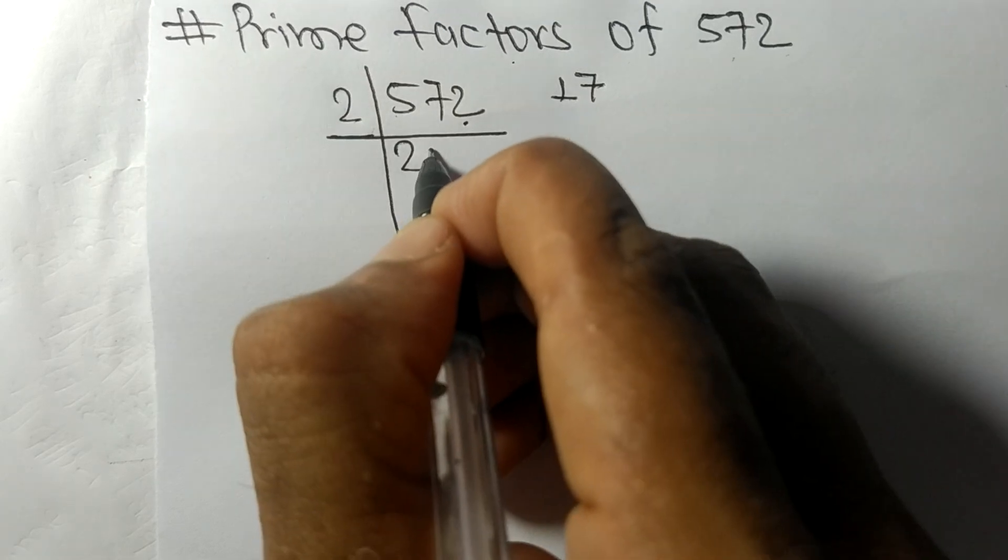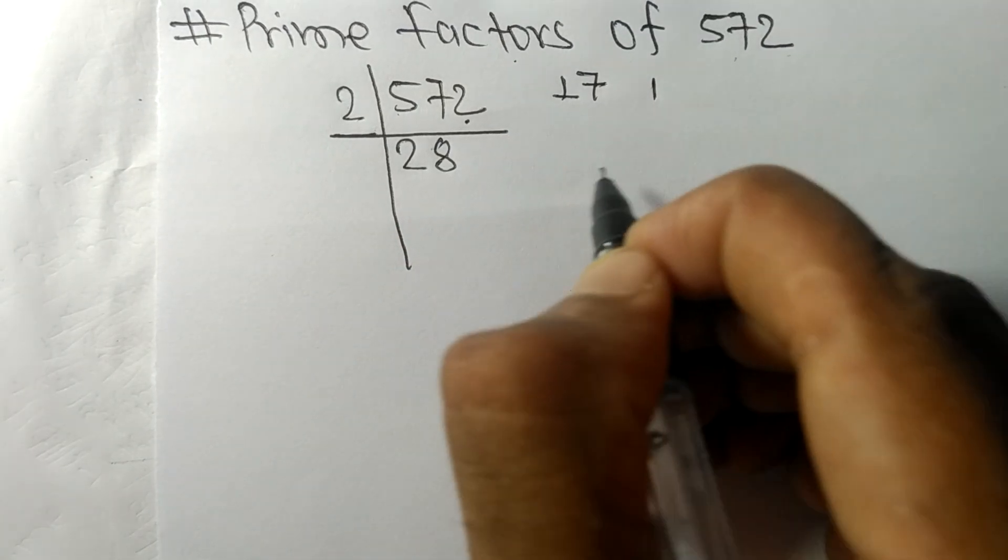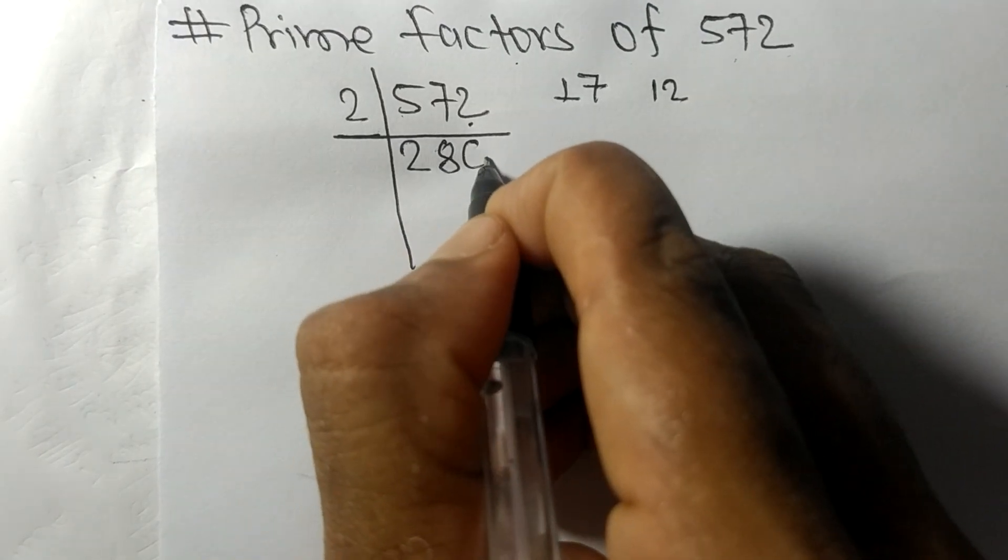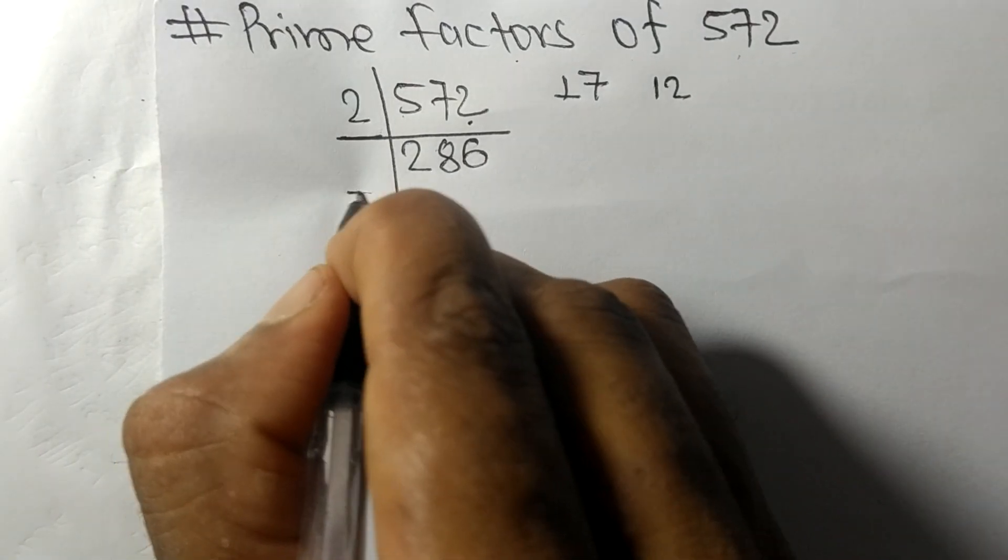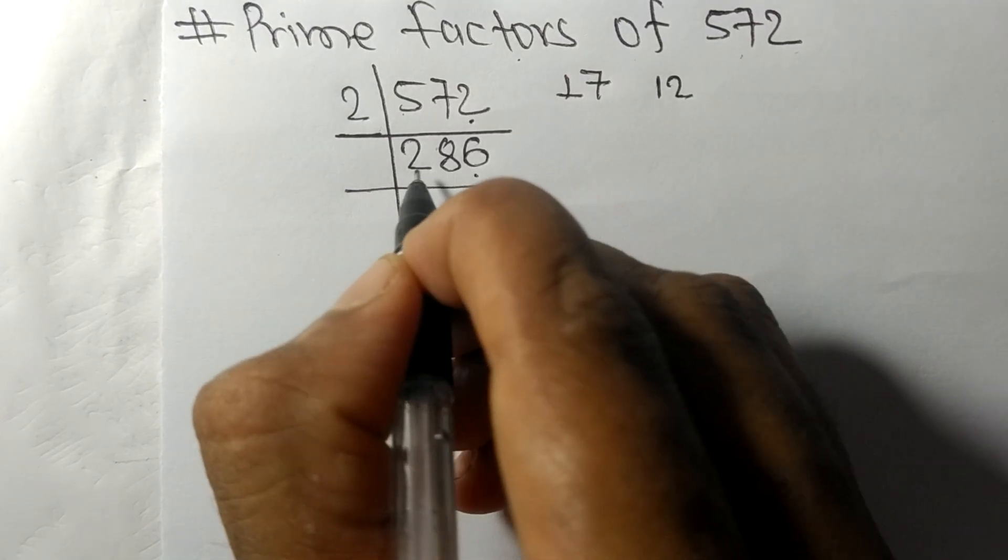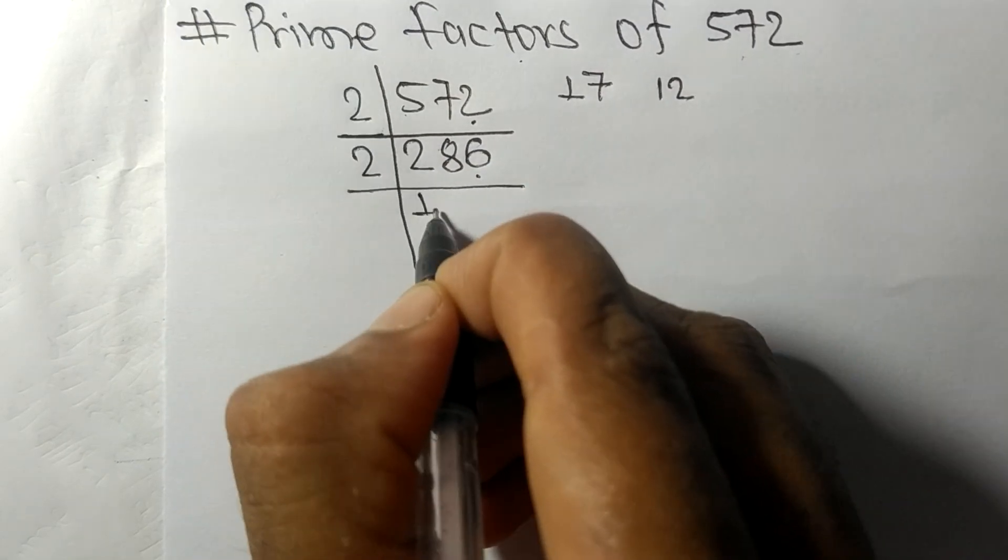So again we have even number 6 at last, so it is divisible by 2. 2 times 1 means 2, 2 times 4 means 8, 2 times 3 means 6.